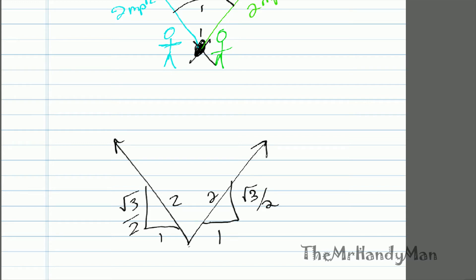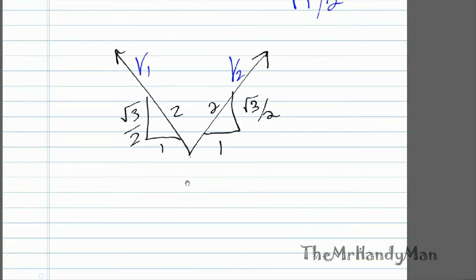Let me ask you one thing. If we were to call this one v1 and the right one v2, what would v1 relative to 2 equal? Well, let me draw it for you in here. v1 relative to 2 would be this line right here.